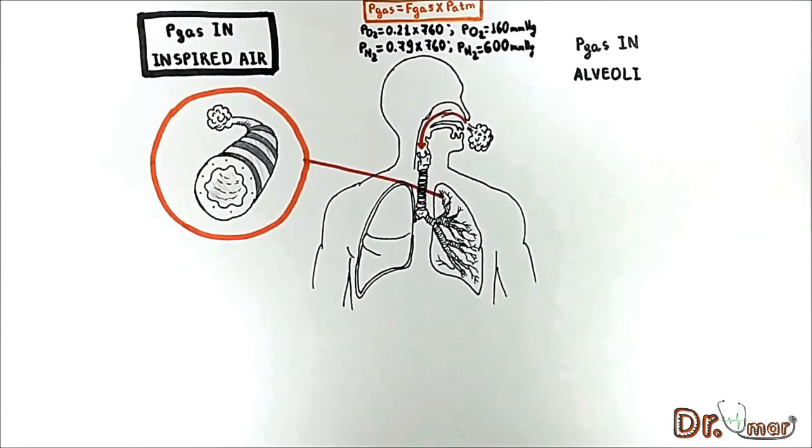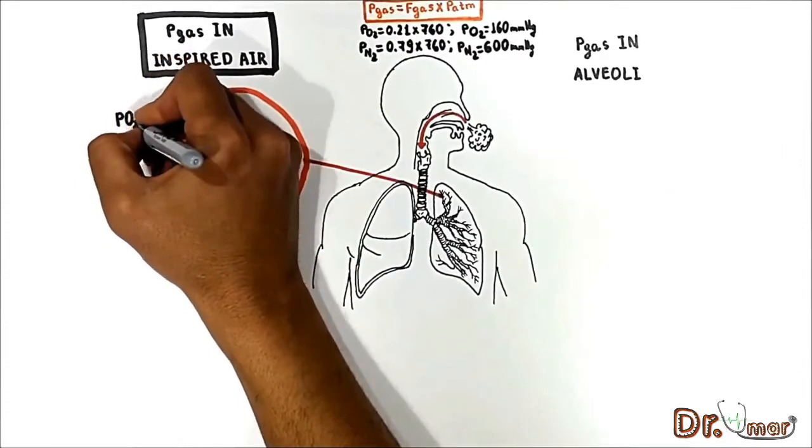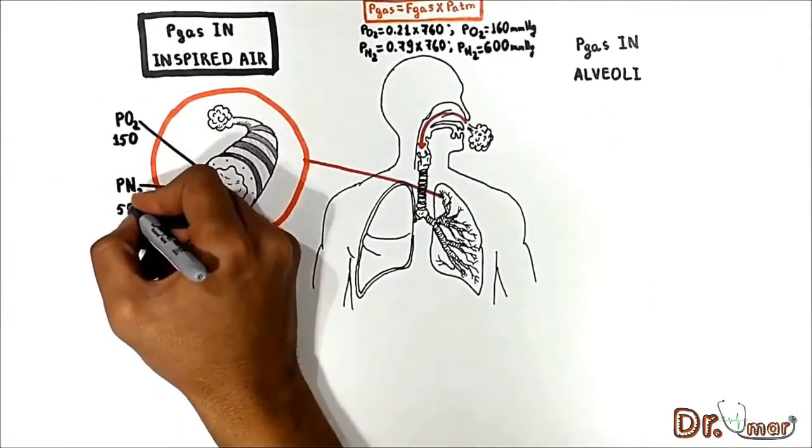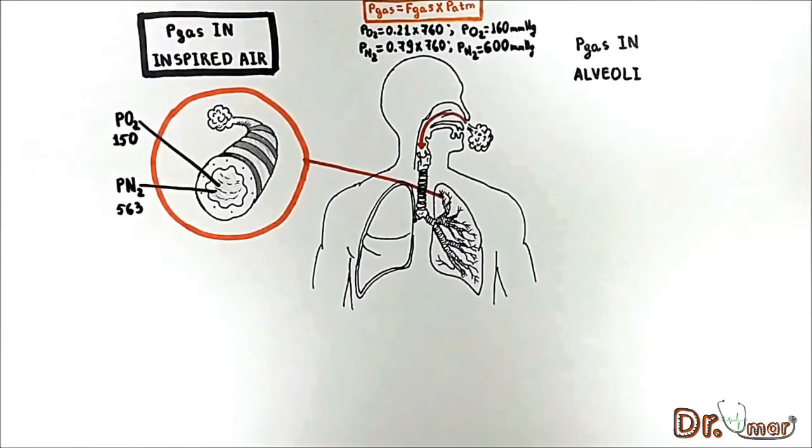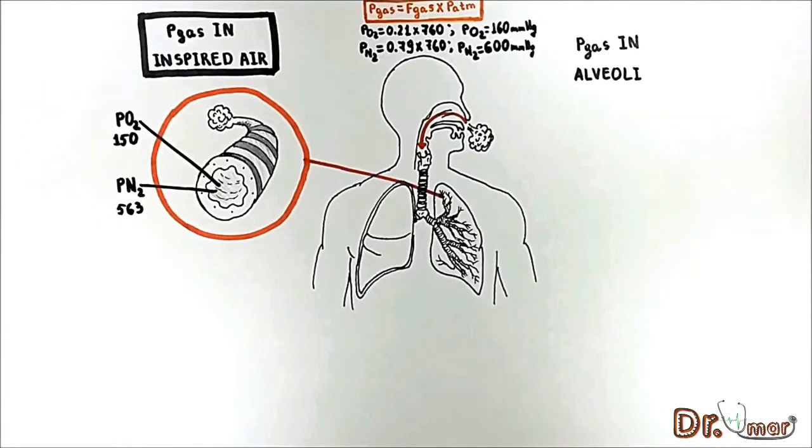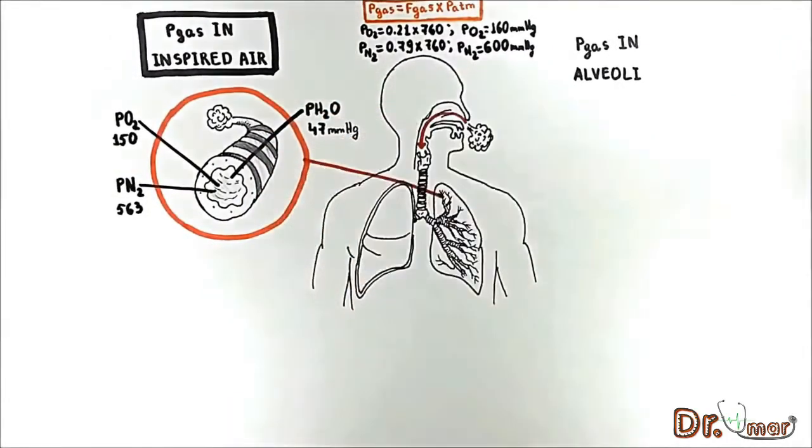It is very important to note that in inspired air the partial pressure of oxygen and nitrogen drops. PO2 drops down to 150, which originally was 160 mmHg, and PN2 decreases to 563 mmHg. This happens because the atmospheric air in the conductive zone will be humidifying and become saturated with water vapor. As a consequence, the partial pressure of air gases reduce. At 37 degrees Celsius, the vapor pressure of water is 47 mmHg and must be accounted for when determining the gas composition of inspired air.